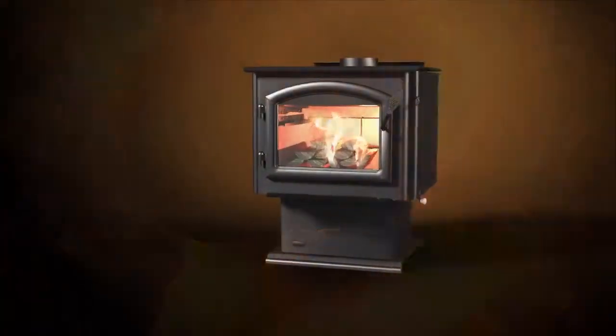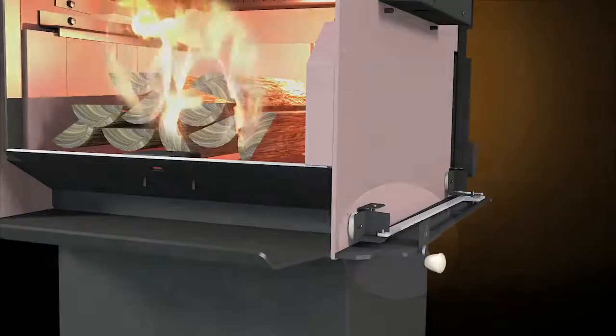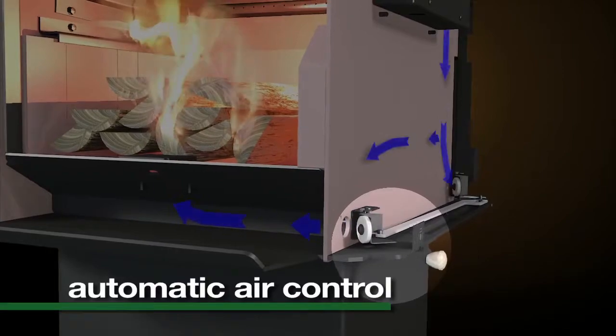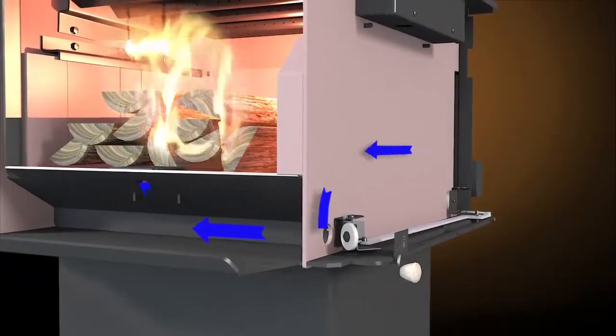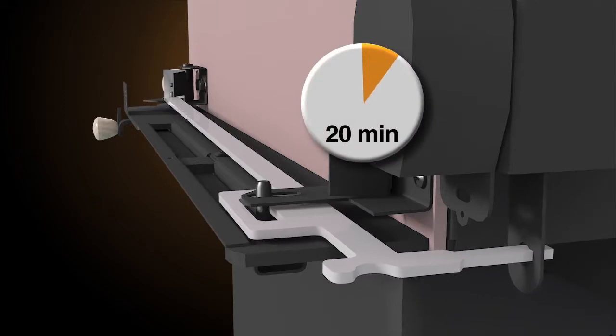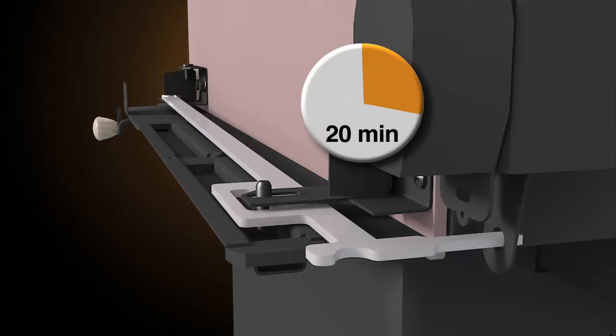The Automatic Air Control located at the bottom right side of the unit controls the amount of air that enters to feed the fire. It also initiates the timer that automatically shuts down this startup air. This takes approximately 20 minutes.